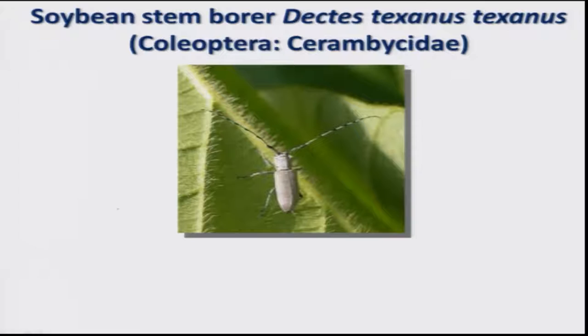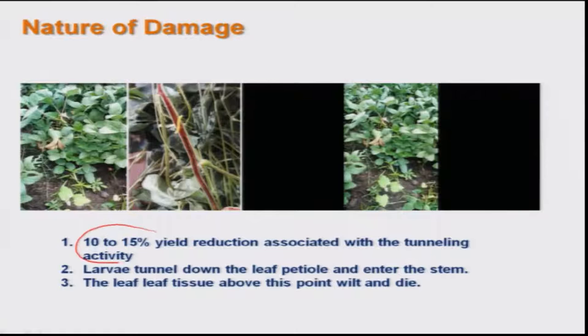Particularly in Madhya Pradesh, there is a serious pest — the soybean girdle beetle, Dectus taxonus taxonus, belonging to Coleoptera — and the grub is the damaging stage. On average, 10 to 15 percent yield loss is seen due to damage by this insect. It bores into the leaf petiole and then enters the stem, causing death of the plant.